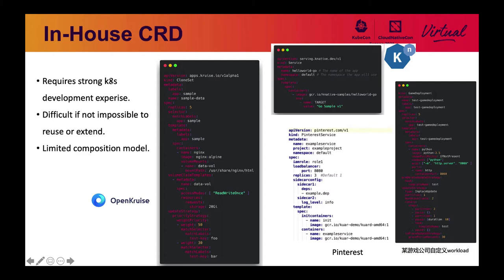Very often, platform teams decide to build their in-house application CRDs to solve these problems. For example, Pinterest has built its own Pinterest service and Robinhood has its own application CRD. But developing such a thing requires strong Kubernetes development skills, which means a very high learning curve and very few people can do it. These APIs are usually very in-house and not generic for reuse or extension, so what Pinterest built couldn't be used at Robinhood or other companies. They only offer limited composition models for their own resources.